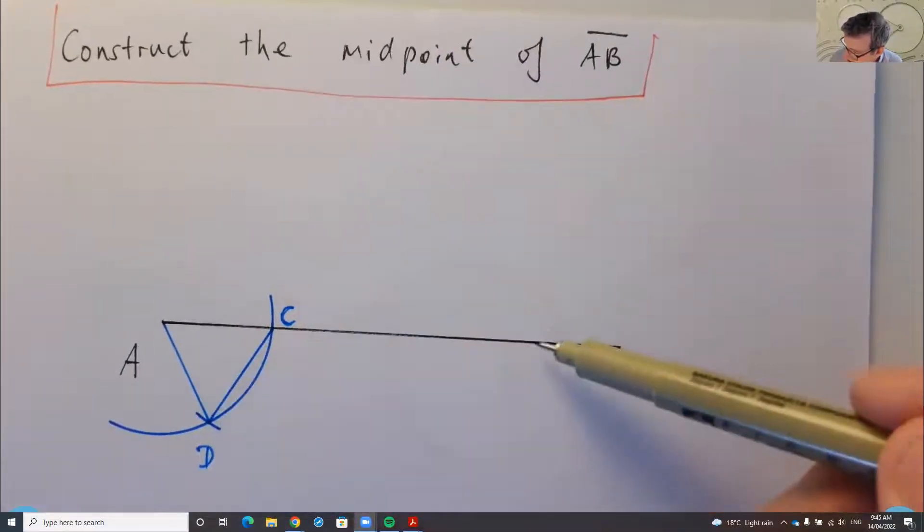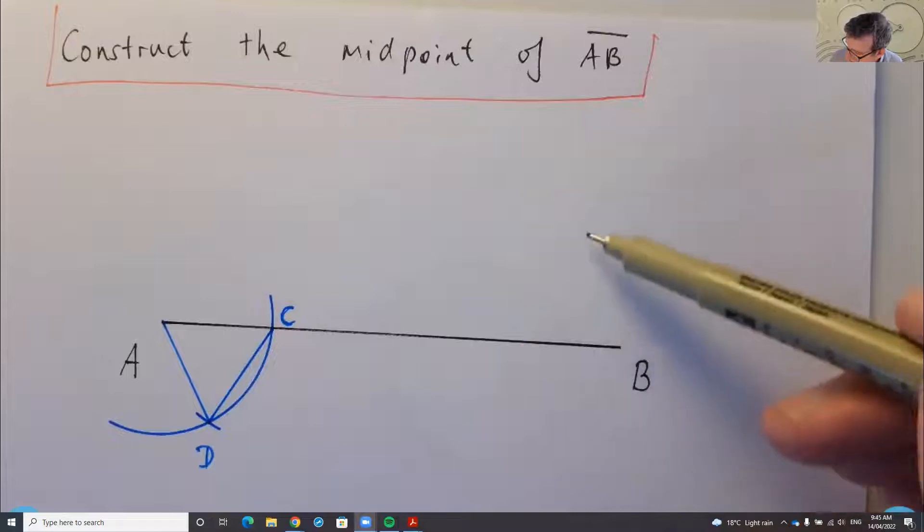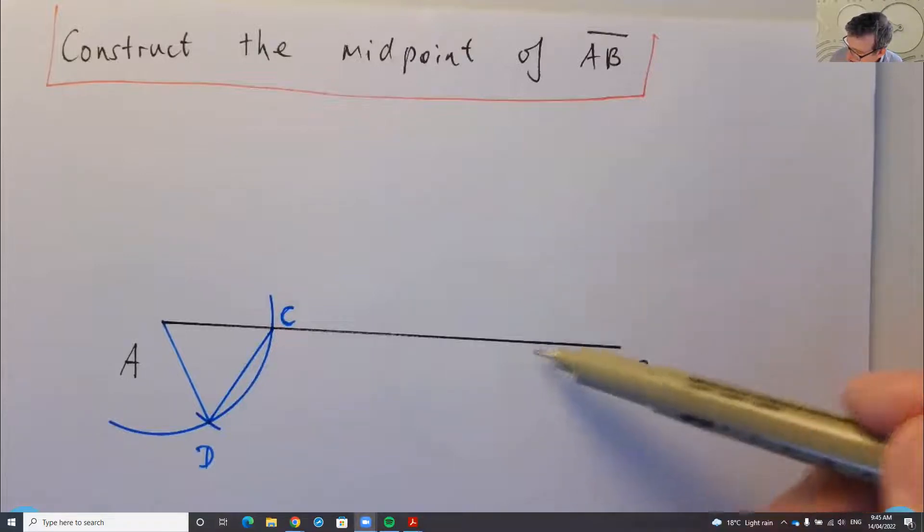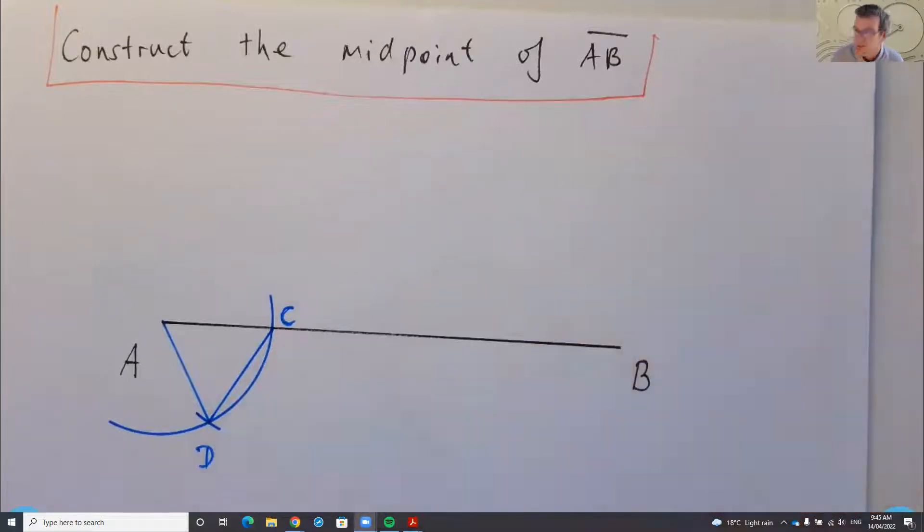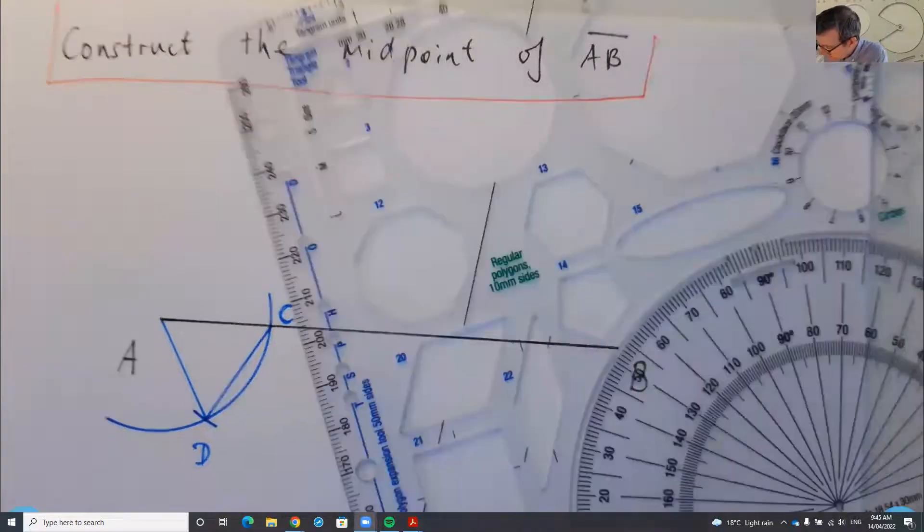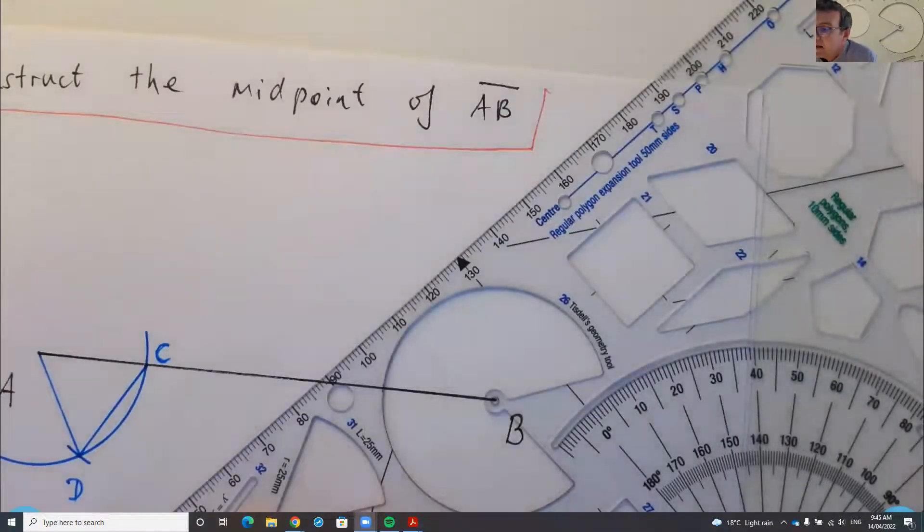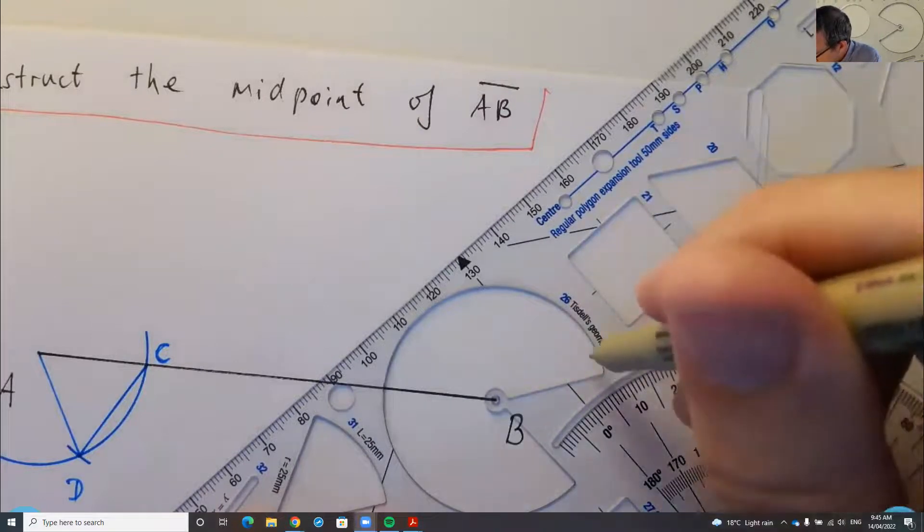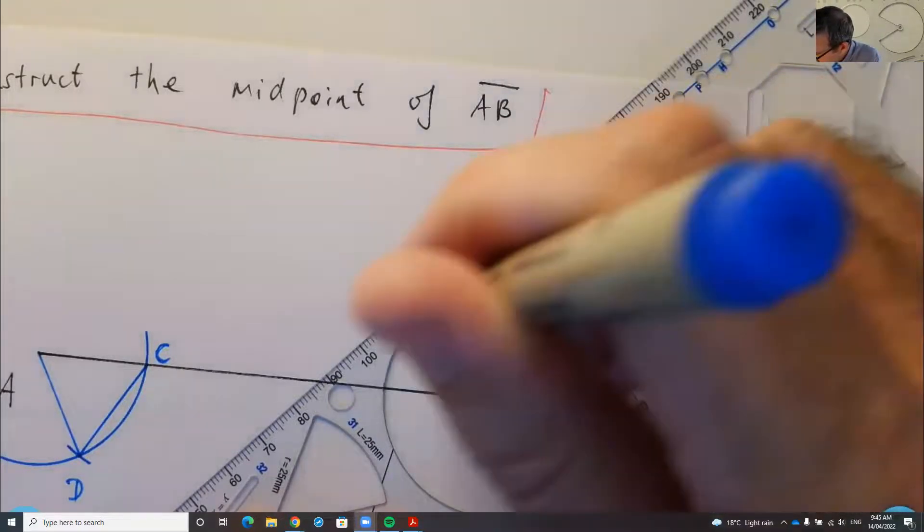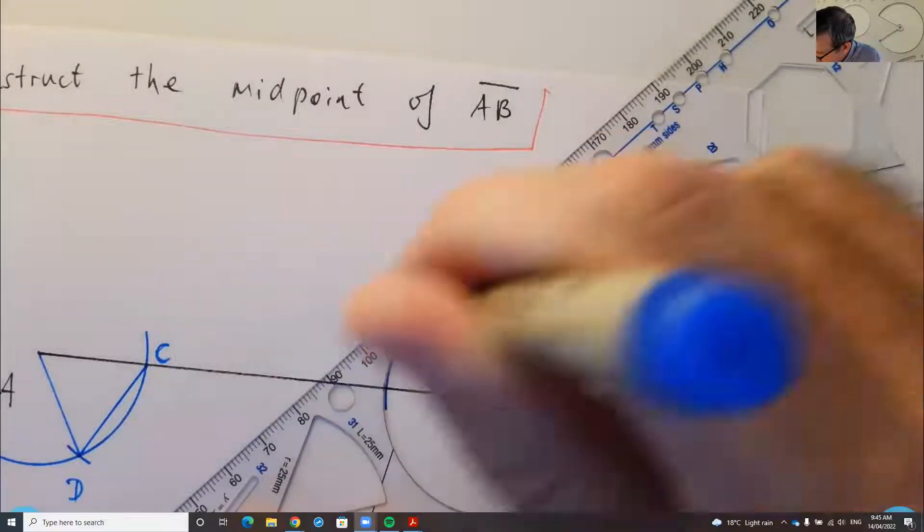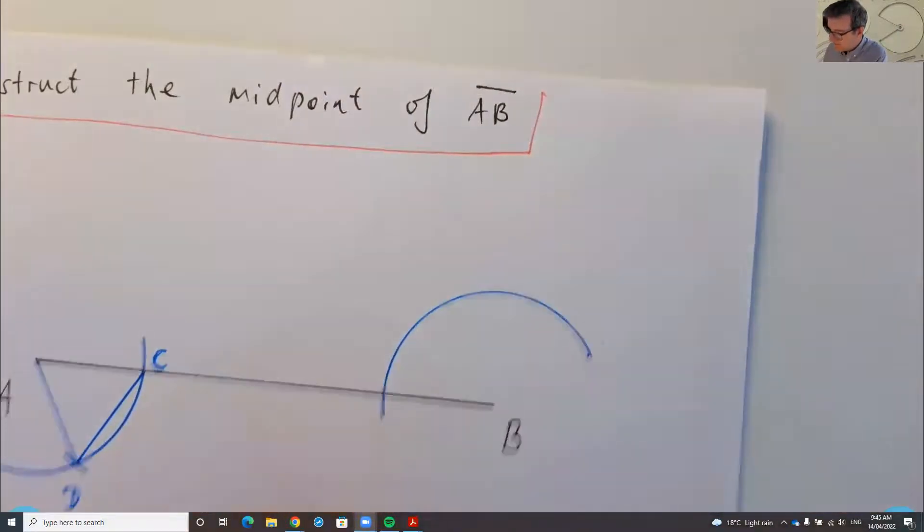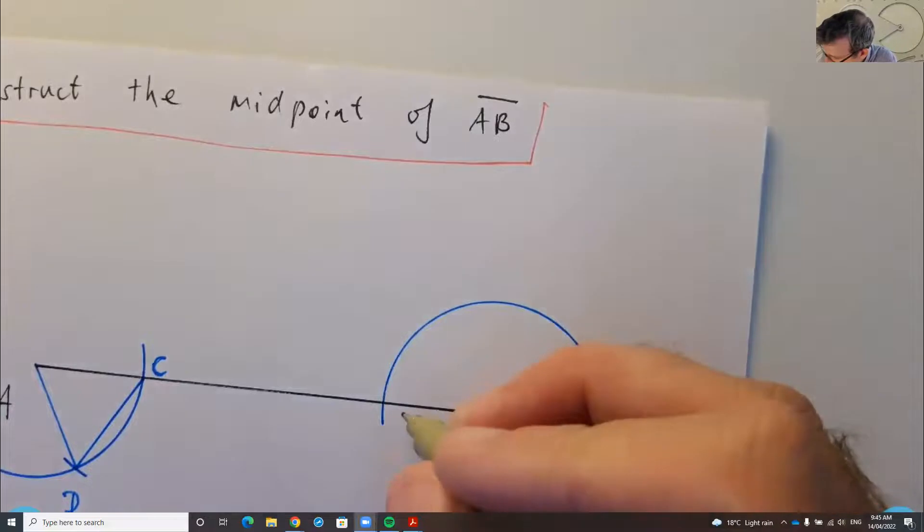Well, how is this helping us find the midpoint? Let's do exactly the same construction, but so the equilateral triangle lies above the line segment AB. So I'm going to repeat the steps. I will place the center of the circle arc at B and I will draw another arc so that it intersects. So let's call that new point E.